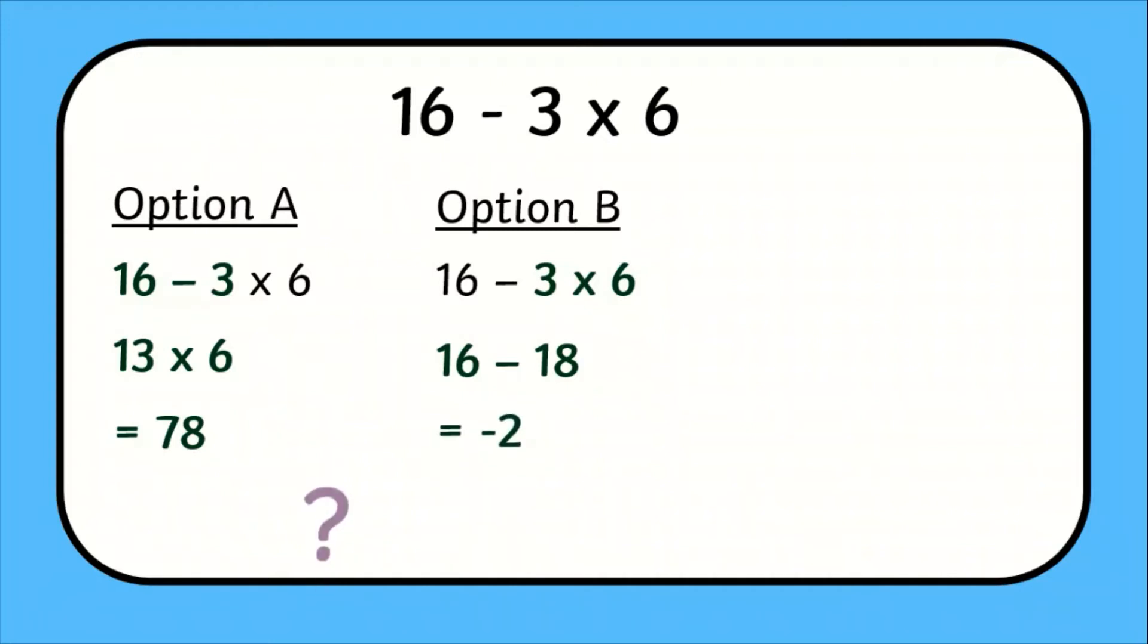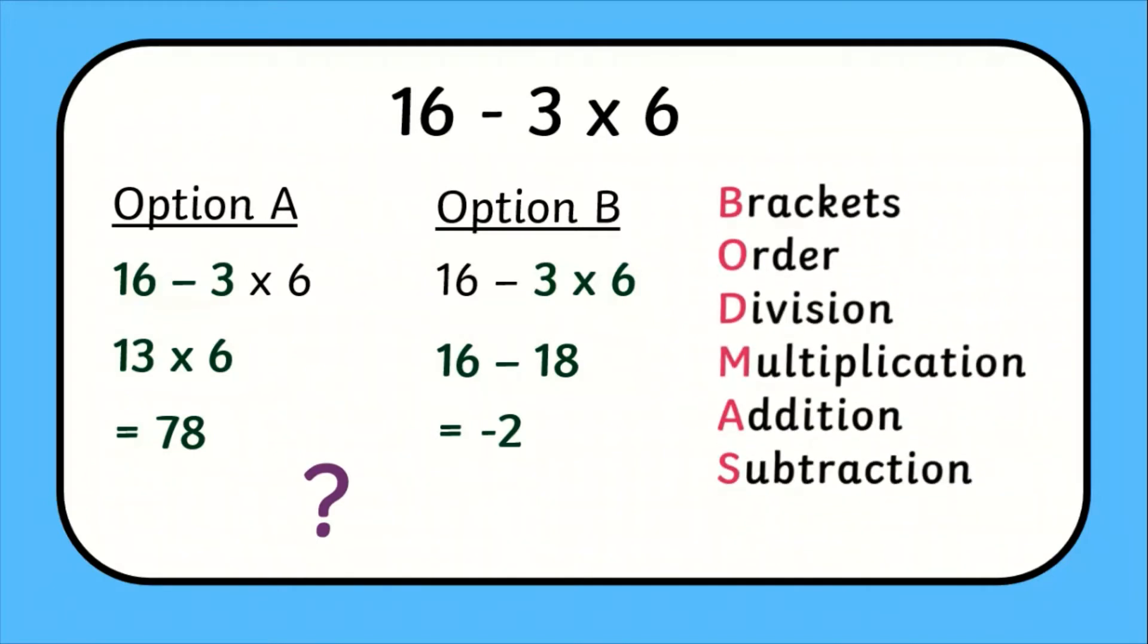Two very different answers. But which one is correct? This is where BODMAS comes in. Using the BODMAS acronym, I can see that multiplication comes before subtraction in the order of operations. So I need to complete the multiplication first. Therefore, option B is correct. The answer is negative 2.